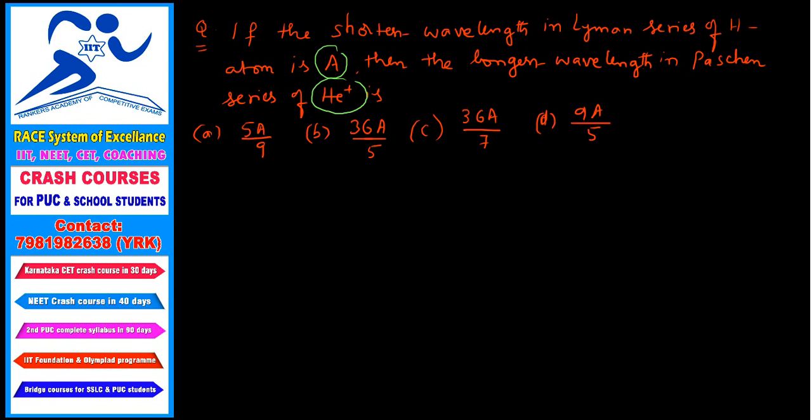So usually we will take the general standard equation for the wave number. That is nu bar equals 1 by lambda, equals R into 1 by N1 square minus 1 by N2 square into Z square. For hydrogen there is no problem. This is for hydrogen if you take Z value is 1.